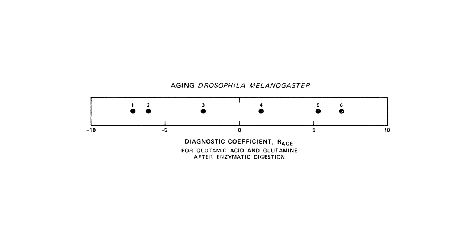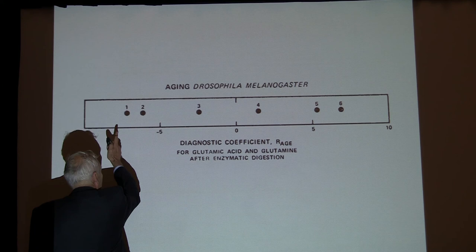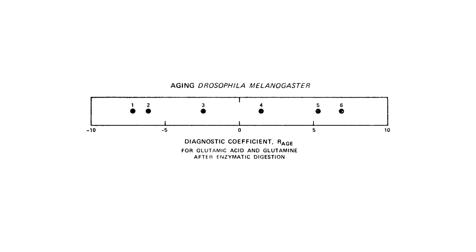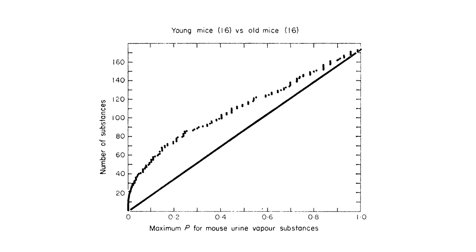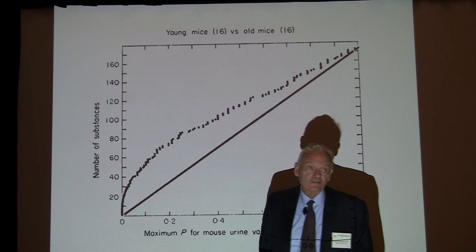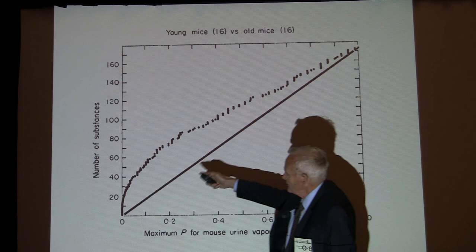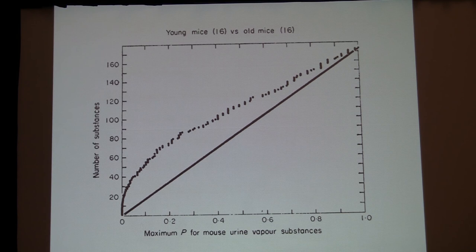Here are little groups of fruit flies in order of their diagnostic coefficient for aging. The diagnostic coefficient — the degree to which their pattern matches the young and the old — tells you how old they are. Here are mice: young mice versus old mice, showing an accumulation of substances. This is on the vapor — the smell of the urine — measured about 170 things, and about 40 to 45 of them are age-correlated. We also did this with men; it comes out the same way.